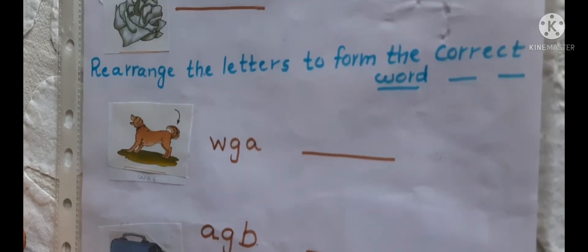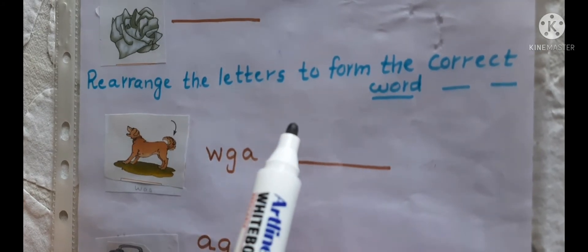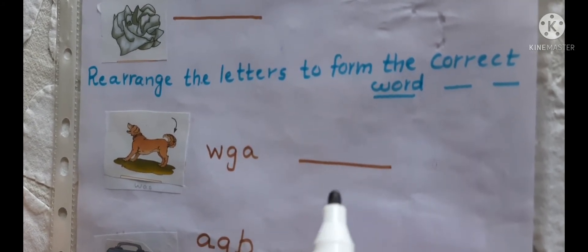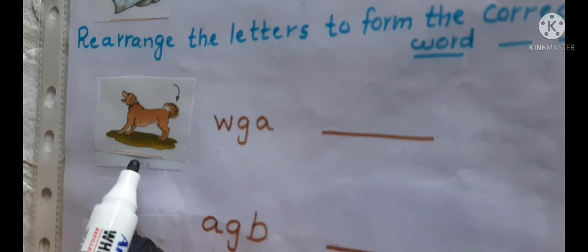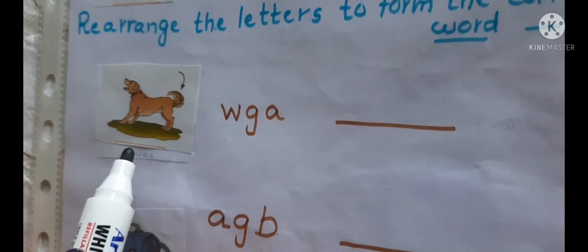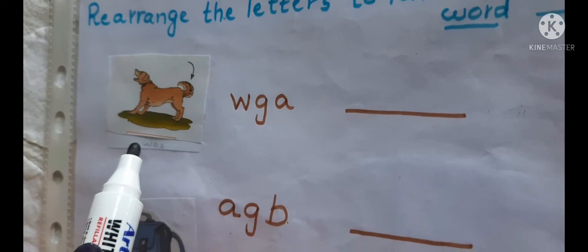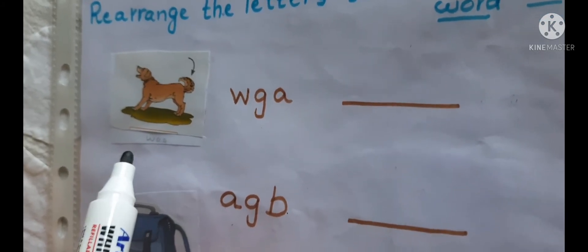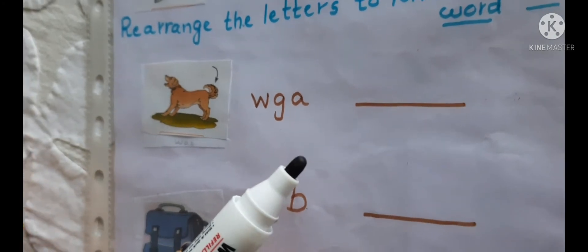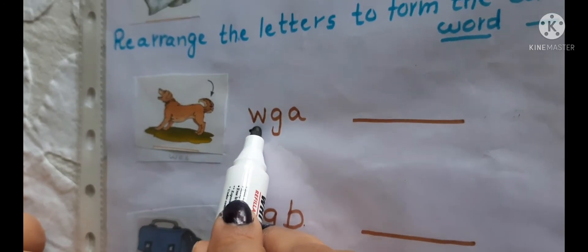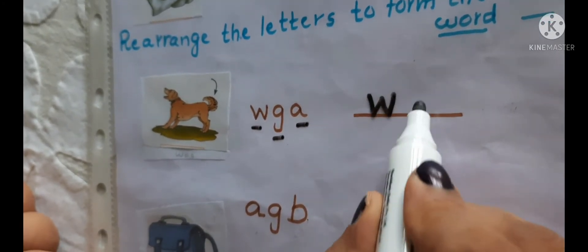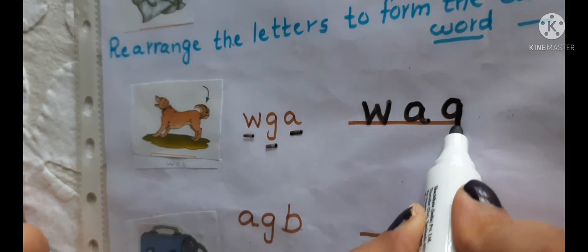Let's move on to the next question. Rearrange the letters to form the correct word. Can you identify this picture? What's this? Listen carefully. What's this? Wag. You are right. W, A, G. W, A, G. Repeat after me.